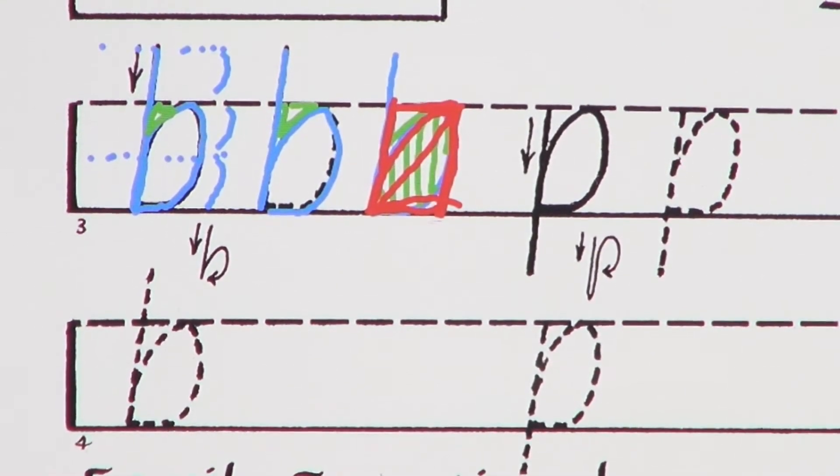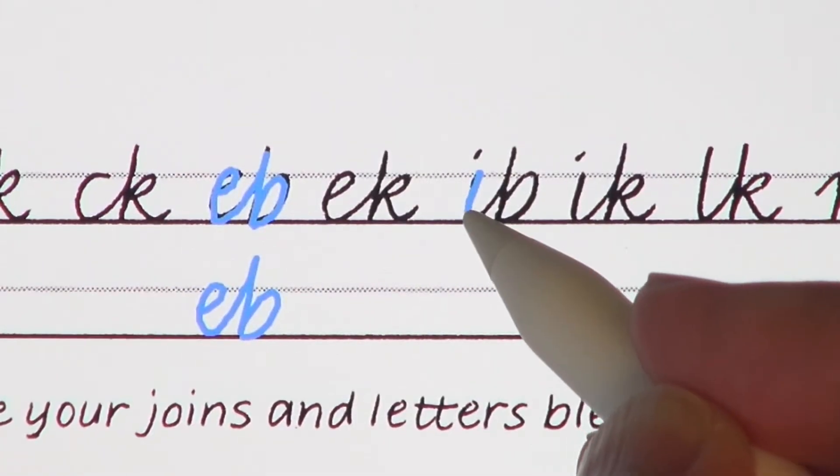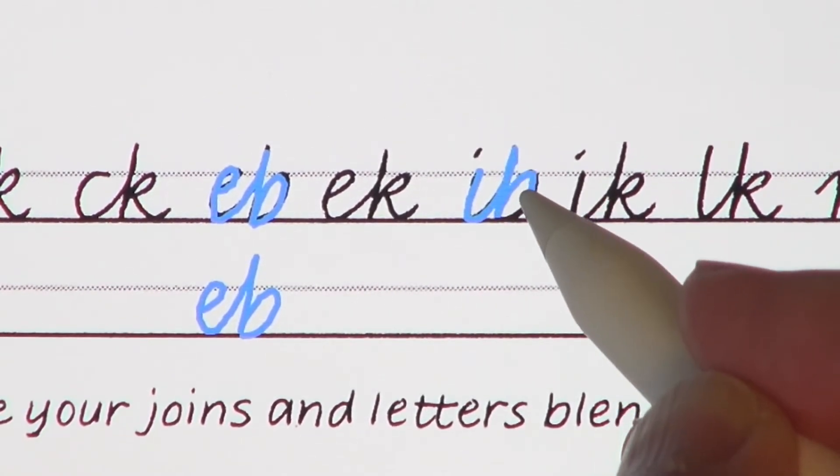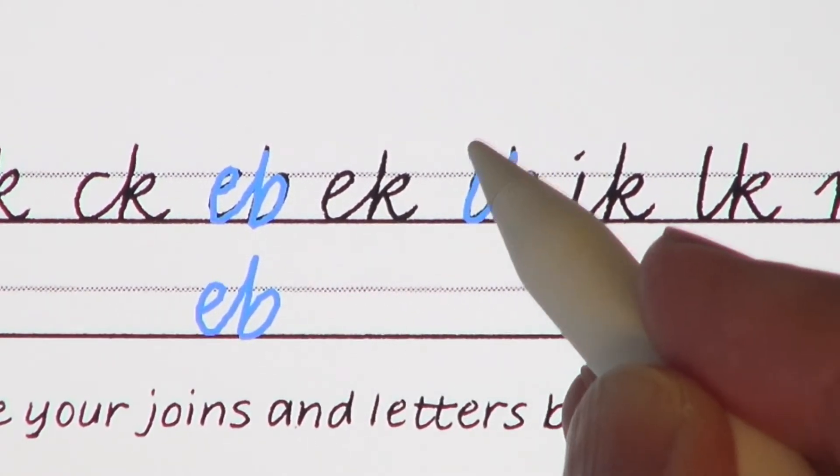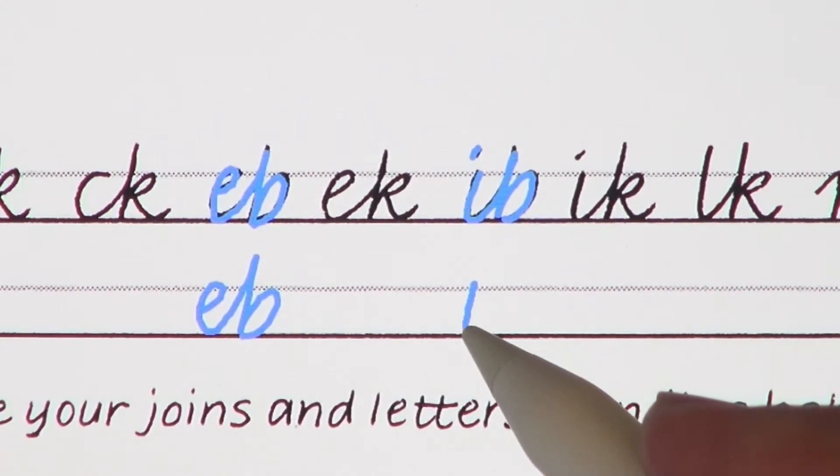Moving on to cursive italic, letter b remains exactly the same. Joining into b is the same as joining into l and h.